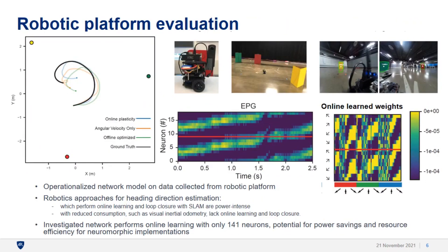Finally, we translate this network to data collected from a robotic platform and demonstrate orientation estimation with online learning. Existing robotic approaches for heading direction estimation include SLAM, which is power intensive and performs online map building and loop closure. Lower power approaches such as visual inertial odometry do not perform online learning and loop closure. The insect connectivity constrained network investigated here performs online learning with only 141 neurons, which has potential for power savings and resource efficiency for neuromorphic implementations.